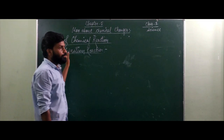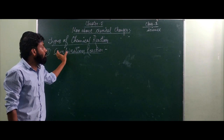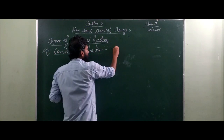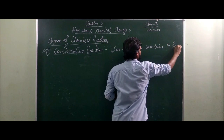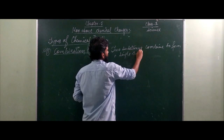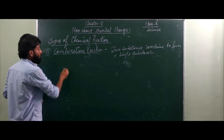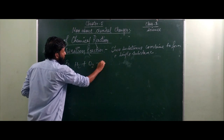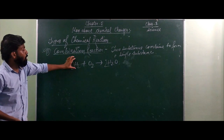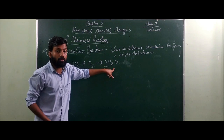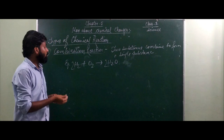Number one is the combination reaction. From the name itself you can see that something is going to combine. A combination reaction is a type of reaction in which two substances combine to form a single substance. For example, hydrogen gas H2 and oxygen gas O2 combine to form H2O — water. You can see here: two substances combine together and then form one single substance. This type of chemical reaction where two substances combine to form a single substance is known as the combination reaction.